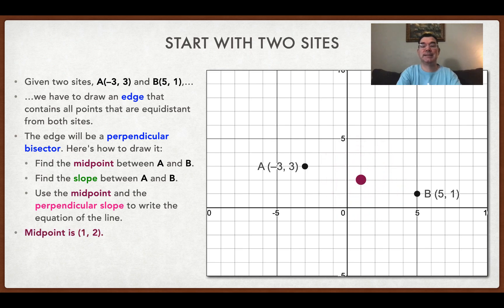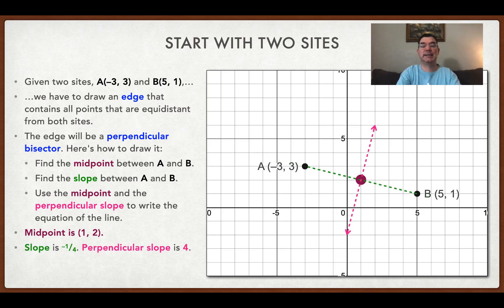So let's look at this example. I found the average of the two x-values, negative three and five, and I got an x-coordinate of one. Then I found the average of the y-coordinates, three and one, and I got a y-coordinate of two, so my midpoint is at one and two. The slope between the two points is negative one-fourth, so to find the perpendicular slope to that, I'm going to do two things to the slope between the two points.